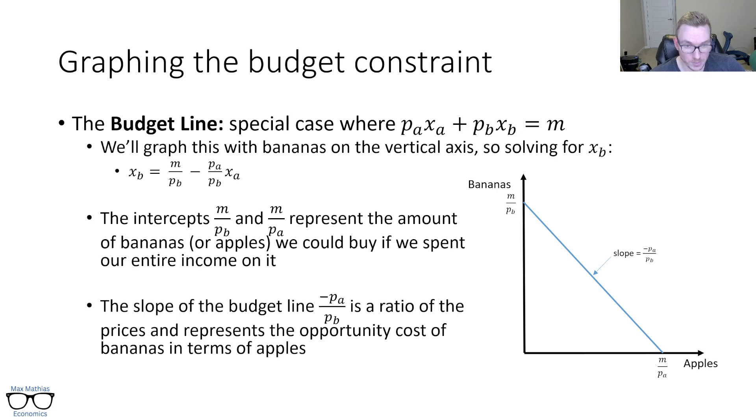Now, the slope of the budget line is a ratio of those prices, the price of apples over the price of bananas. And it represents the opportunity cost of bananas in terms of apples. It's a rate at which I can exchange them between each other. In that case, if apples were five and bananas were $10, like they were on the last one, basically that's saying for every one banana I give up, I can get two apples with it.